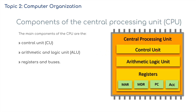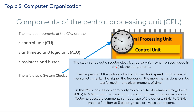We've got a schematic model here. We've got the control unit, arithmetic logic unit, registers, and buses. We've also got a system clock. The clock sends out a regular electronic pulse which synchronizes all of the components. The frequency of the pulses is known as the clock speed — this is a term you may have heard of. Clock speed is measured in hertz. The higher the frequency, the more instructions can be performed at any given moment in time.